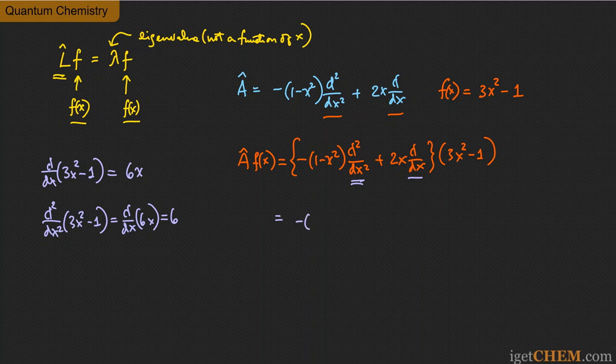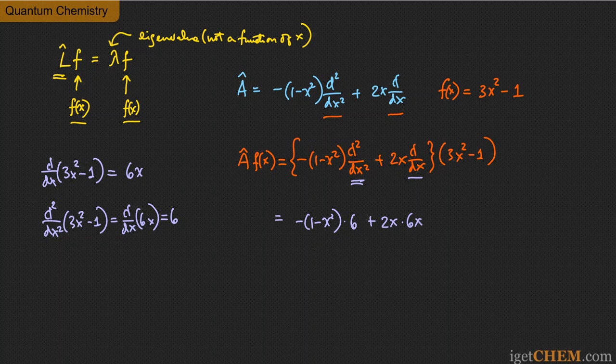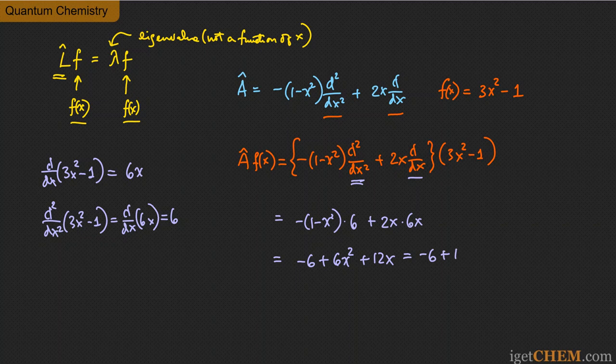If we put all of that in, we will find that the first term is -(1 - x²) multiplied by d²/dx² of f, and that is just 6. And then the second term gives you 2x(df/dx), which is 6x. So A operated on f gives you that. You can just expand everything: -6 + 6x² + 12x squared, which equals -6 + 18x². And so you can see that this is basically just 6 times (3x² - 1).